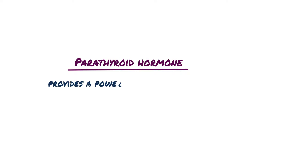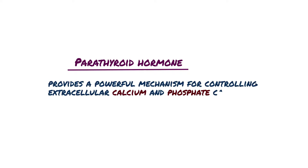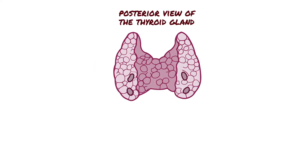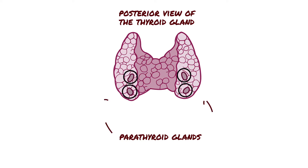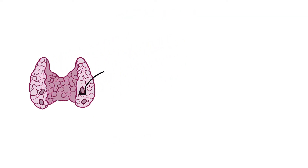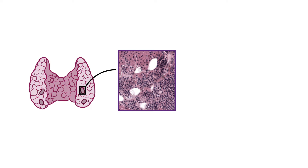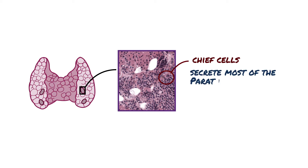Parathyroid hormone provides a powerful mechanism for controlling extracellular calcium and phosphate concentrations. Normally there are four parathyroid glands in humans, located immediately behind the thyroid gland — one behind each of the upper and lower poles of the thyroid. The parathyroid gland of the adult human contains mainly chief cells and a small to moderate number of oxyphil cells. The chief cells are believed to secrete most of the parathyroid hormone.